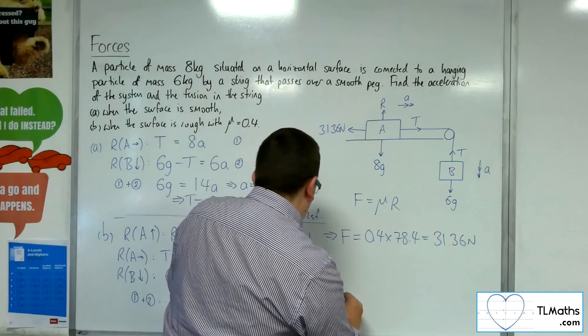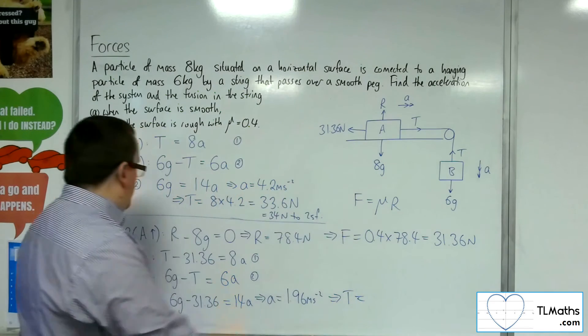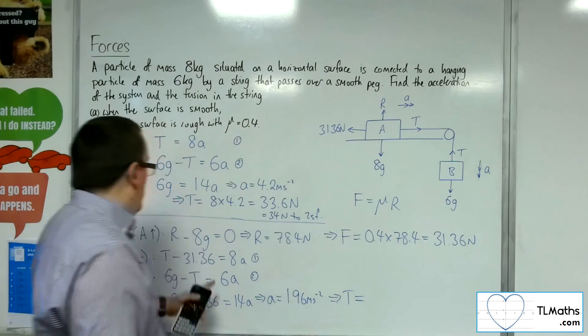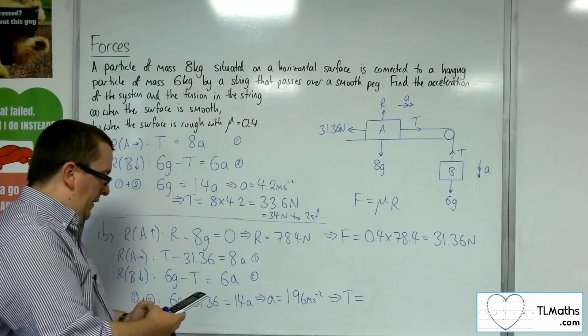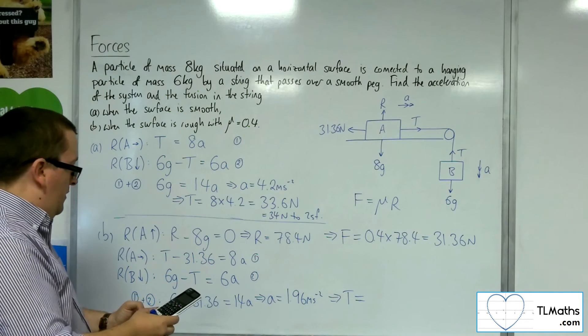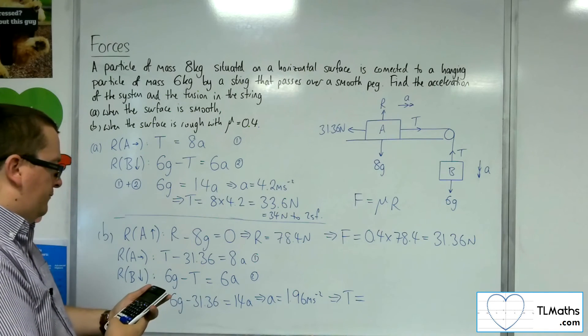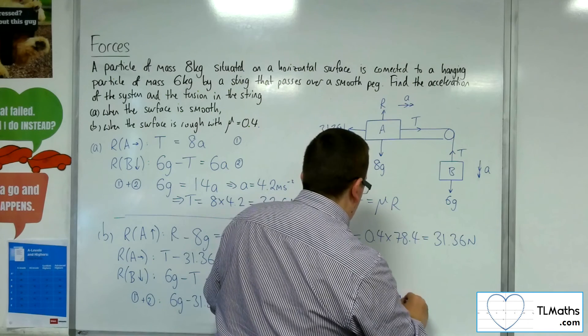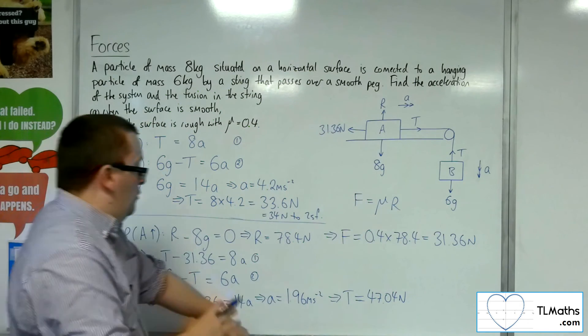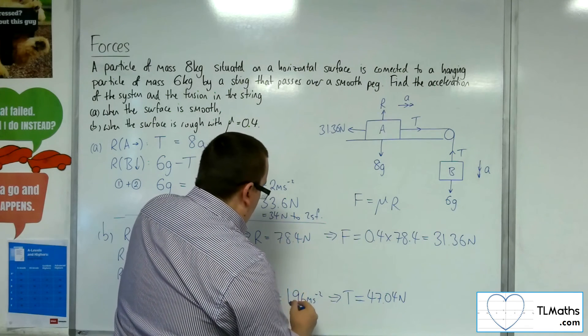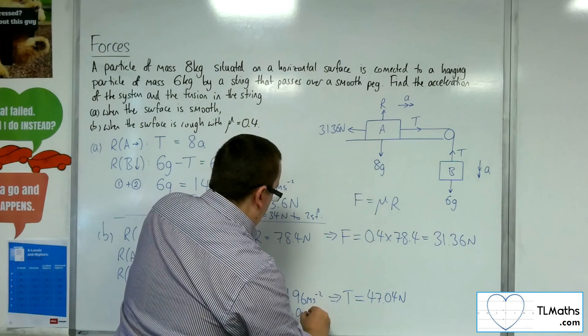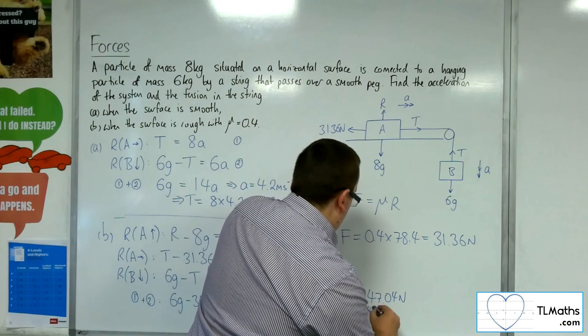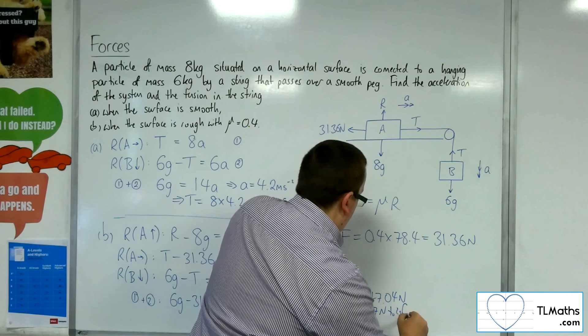So given that, we can then substitute in to one of these two equations. If I substitute it to equation number 1, we've got 8 lots of the 1.96, and then add on the 31.36, and we get 47.04 newtons. So to 2 sig fig, this would be 2.0 metres per second per second, the acceleration, and 47 newtons for the tension.